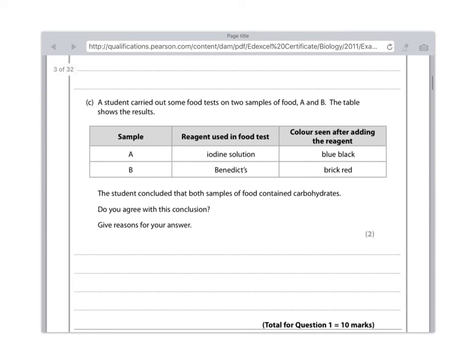So the student concluded that both samples of food contain carbohydrates. Do you agree with this conclusion? Yes, I do. Why? Because I know that A is starch because it turned blue-black. So I'm going to write yes because sample A is starch. And then for Part B, again, yes, because Benedict's has turned brick-red, which is a positive result for glucose. And glucose and starch are both examples of carbohydrates. So that's what you're going to write. So that is quite tricky because it needs you to know both the positive and negative results of both of these food tests and the fact that starch and glucose are both carbohydrates.